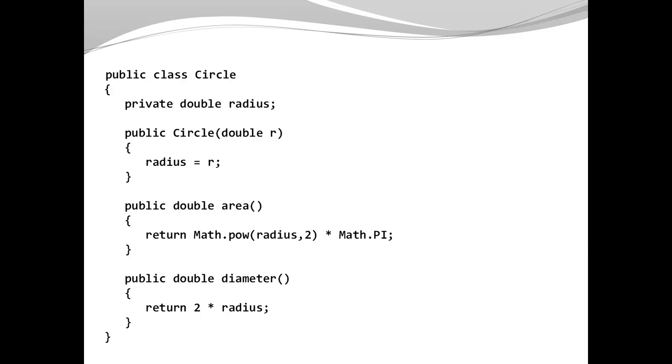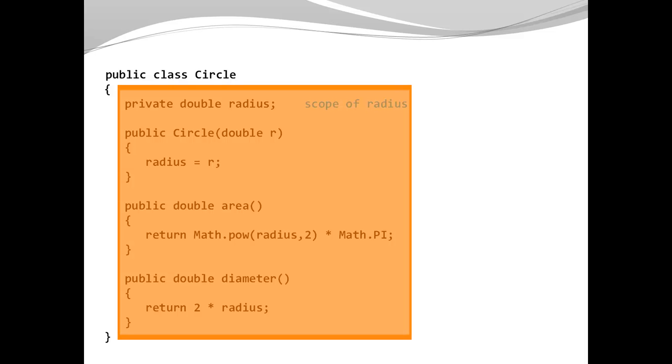Now this is a different example. This is a simple class called circle, and I want to show you the scope of a field. It has one single field, the radius. It has a parameterized constructor that initializes the radius, the area, and the diameter that returns the calculated area or calculated diameter based on the radius. Here you can see we use the field radius inside the constructor. We also use radius inside the different methods. Radius is accessible, it is available both in constructors and in methods, and that is possible because the scope of a field is the whole class.